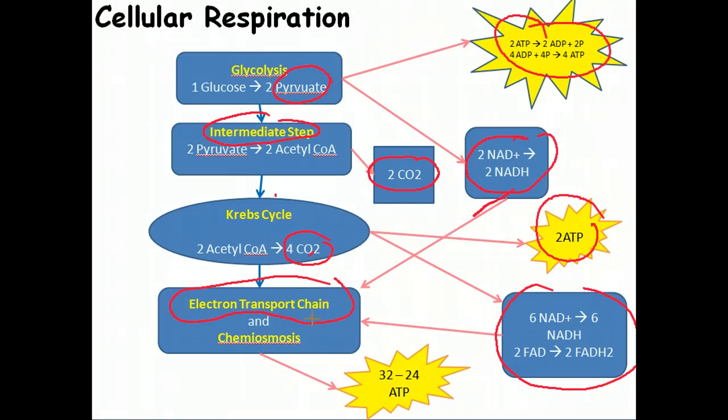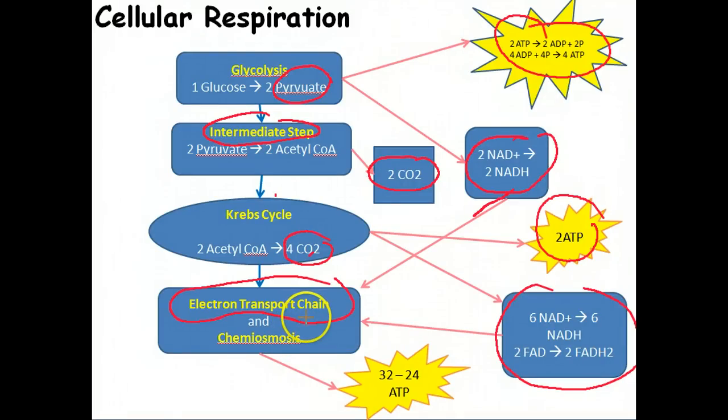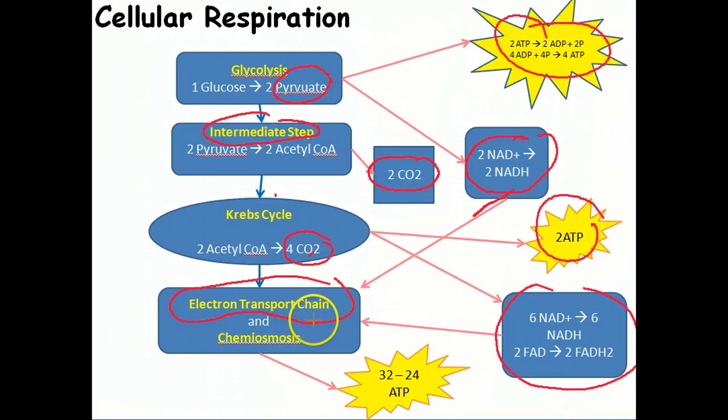The electron transport chain transports electrons from one molecule to another and eventually pumps hydrogen protons across the membrane. This forms a hydrogen proton gradient on one side of the membrane. This gradient forces those molecules to want to come back in, so they want to move against their gradient.